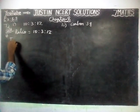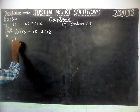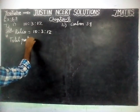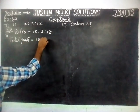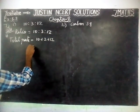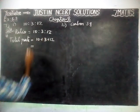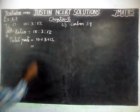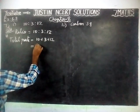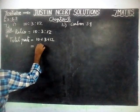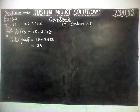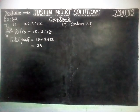So, total parts is equal to 10 plus 3 plus 12. 10 plus 3 is 13; 13 plus 12 is 25. So, total parts is equal to 25.